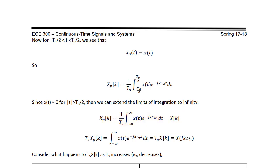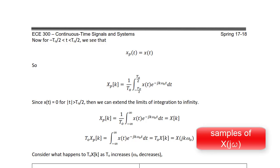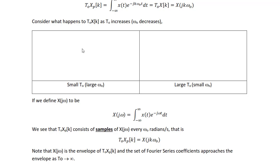By multiplying both sides by t₀, we have t₀·xp(k) equals the integral from minus infinity to infinity of x(t) e^(−jkω₀t) dt, which equals t₀·x(k). We will show this is equal to X(jkω₀), which are samples of X(jω).